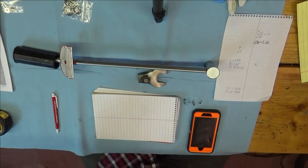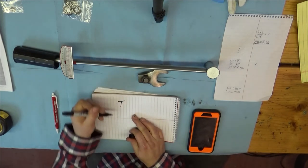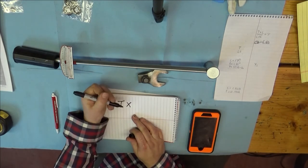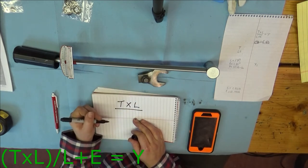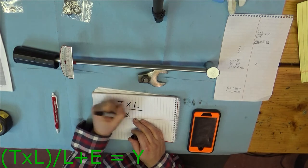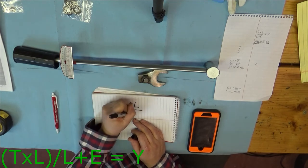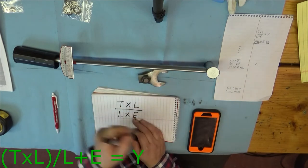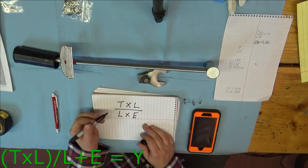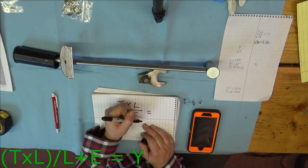The formula is torque times length divided by length plus the extra length, in this case from center line to center of the bolt, equals our new torque.